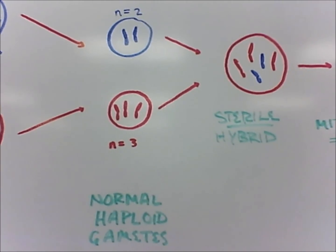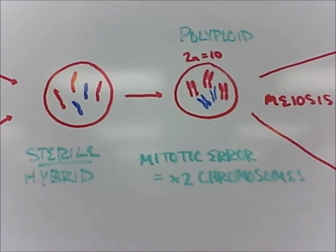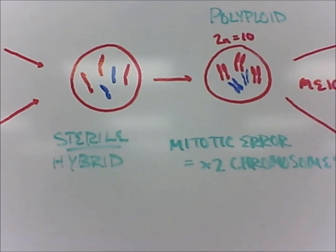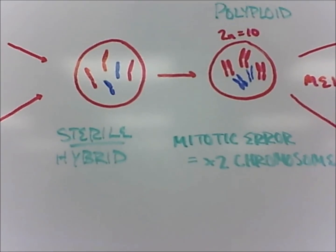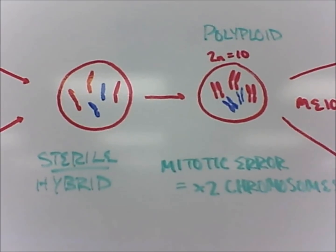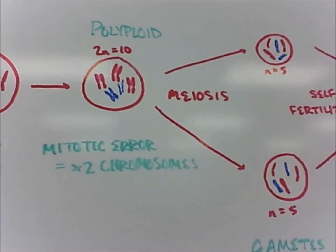If an error in mitosis occurs, the hybrid can have cells with two sets of chromosomes, which means it's a polyploid. Now the chromosomes are paired, and the cell can undergo meiosis, producing gametes.